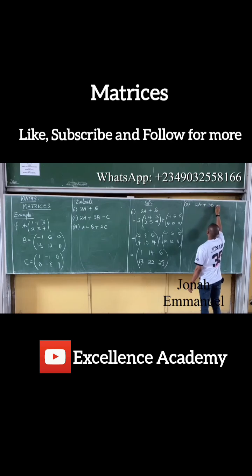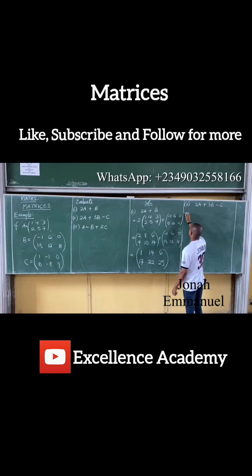Plus 3B minus C. This is now equal to 2A, means 2 is multiplied by what? B. I'm having 2 into what's A there? 1, 4, 3, 2, 5, 7.